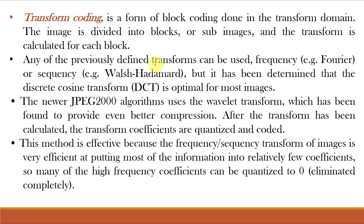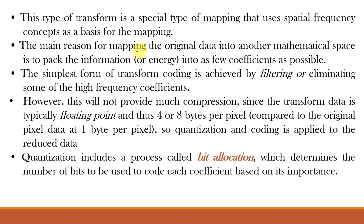This slide shows the procedure for transform coding. Any of the known transforms can be used such as Fourier transform or Walsh-Hadamard transform, but DCT is most optimal. DCT is used in JPEG compression and the newer JPEG 2000 algorithm uses the wavelet transform. This method is effective because the frequency transform of images is very efficient at putting most of the information into relatively few coefficients, so many of the high-frequency coefficients can be quantized to zero or eliminated completely. The main reason for mapping the original data into another mathematical space is to pack information into as few coefficients as possible.